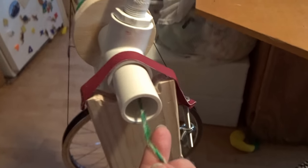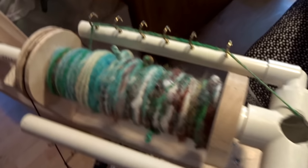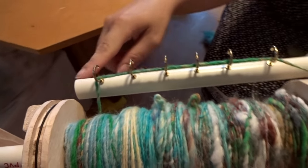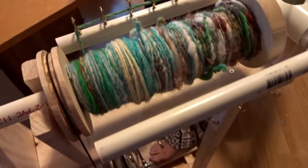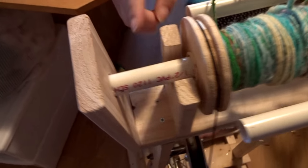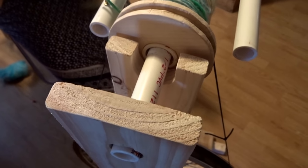I put six cup hooks on each side of the flyer. That's worked out really good. I just drilled little holes first and screwed them in. This is the end that keeps the bobbin in there.